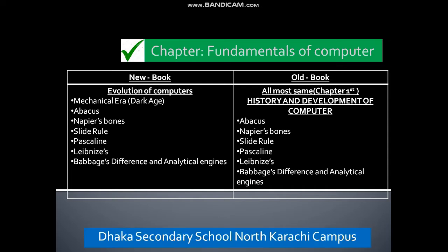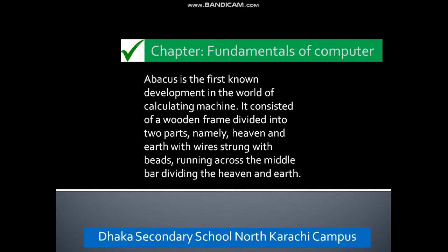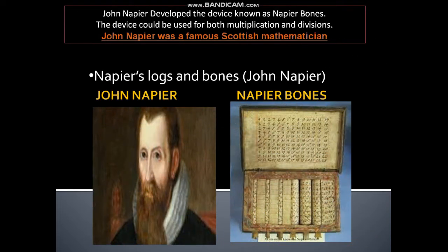In the evolution of computer, the mechanical era includes the abacus, Napier's bones, slide rules, Pascal's machine, Leibniz's calculator, and Babbage's engine. The abacus is the first known calculating machine developed in the world. It consists of a wooden frame divided into two parts namely heaven and earth, with wires strung with beads running across the middle bar.